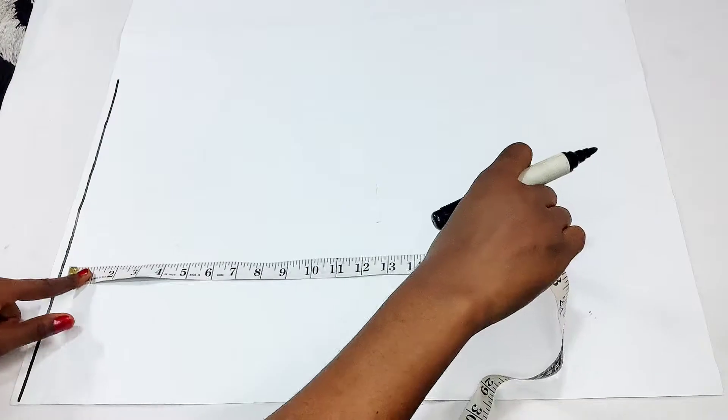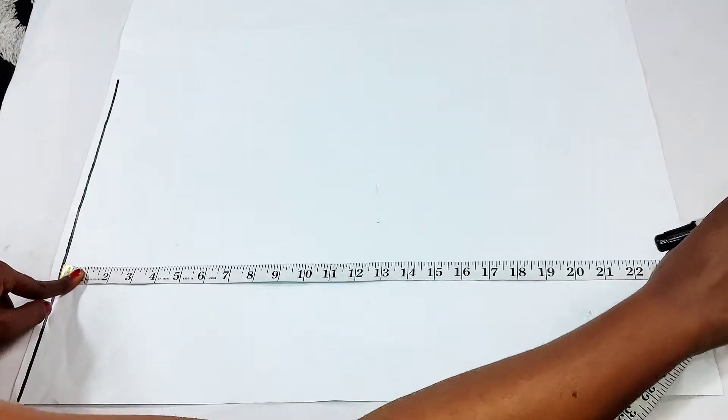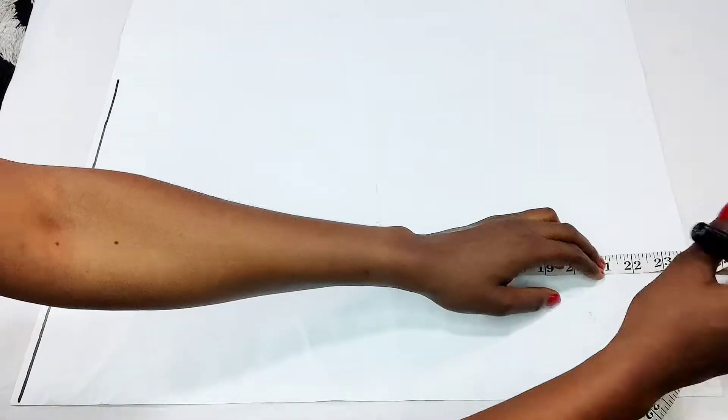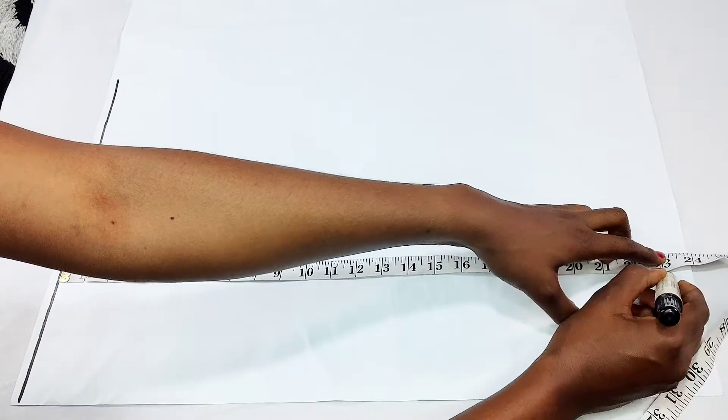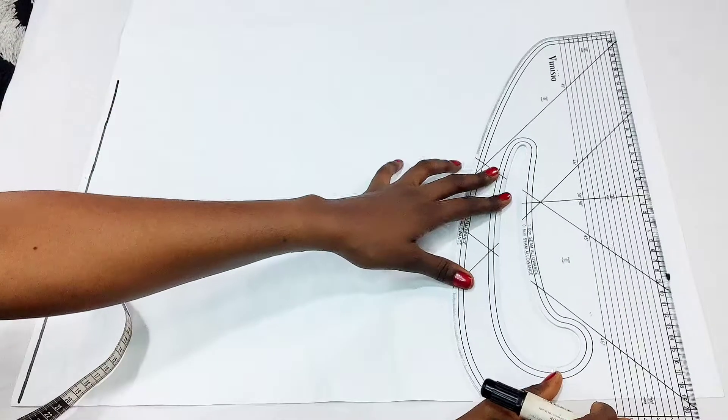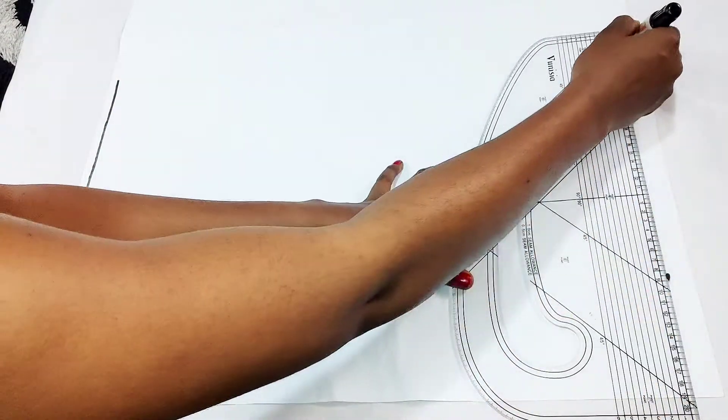Then you mark where you intend for your sleeve to end. Yours can be short or medium length. I'm making mine 23 inches because I wanted to stop at my wrist.